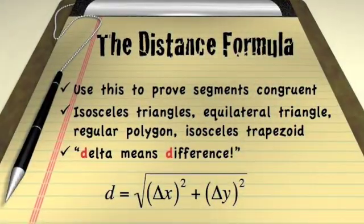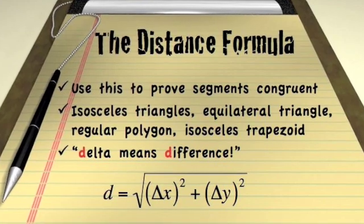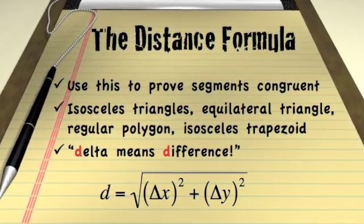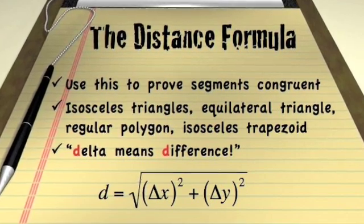Did somebody say math? It's the distance formula. You use the distance formula to prove that two things are congruent and that's exactly what we need to prove that this triangle is isosceles.